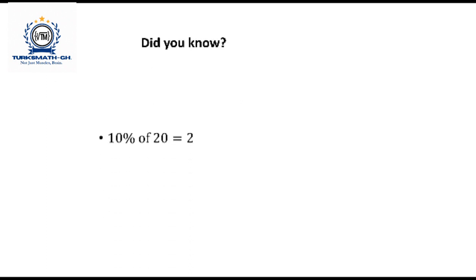Did you know that 10% of 20 equals 2? Here you have 2 digit numbers, both end with 0. So you just multiply the first digits, 1 times 2 and you have 2. Similarly, 20% of 30 equals 6.